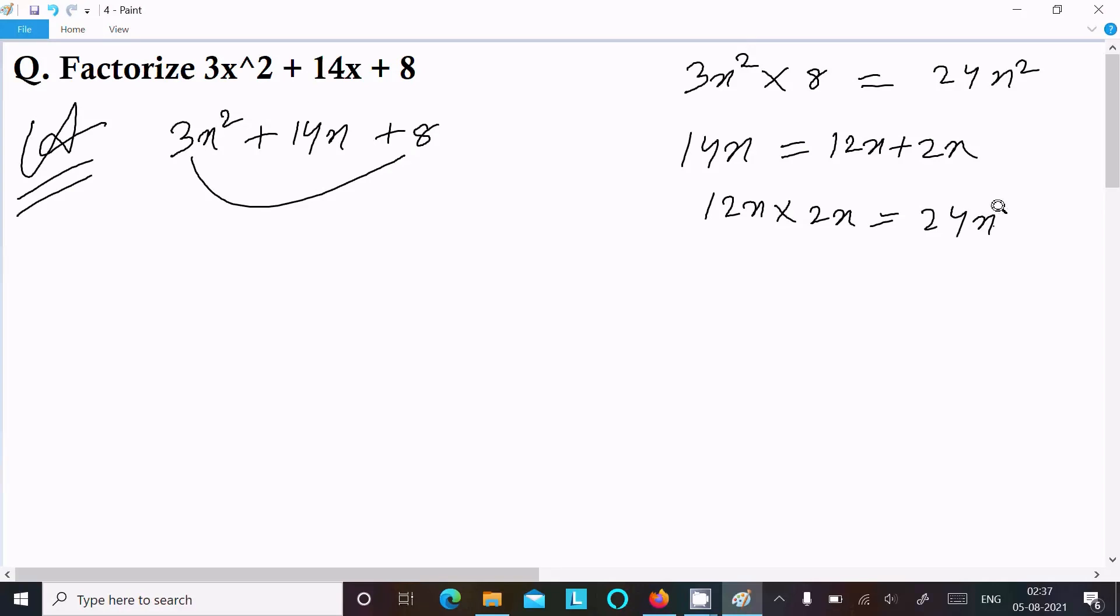So now writing here, in place of 14x we can write 12x plus 2x: 3x² + 12x + 2x + 8. Take the common between these two, so writing here 3x(x + 4). Here 2 is the common: 2(x + 4).